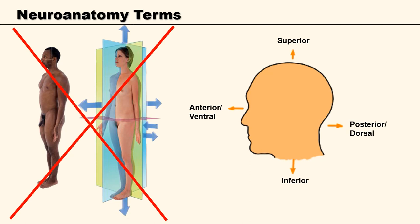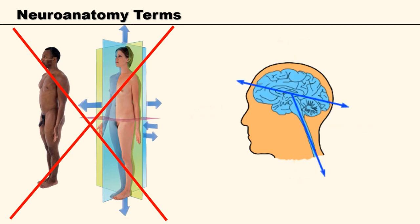However, when it comes to the nervous system, we have to look at it differently. We think of the nervous system running along two planes: the spinal cord, which runs along a vertical plane, and the brain, which runs from the front of the skull to the back. When describing the perceived front of the brain we call this rostral, because it is near the nose or beak — which is where the term rostral comes from. We describe the spine as being caudal, which makes sense as it travels to the bottom of the back where we would have a tail. However, we also call the perceived back of the brain caudal too. The back of the spine and the top of the brain are termed dorsal, and the front of the spine and the underside of the brain are termed ventral.